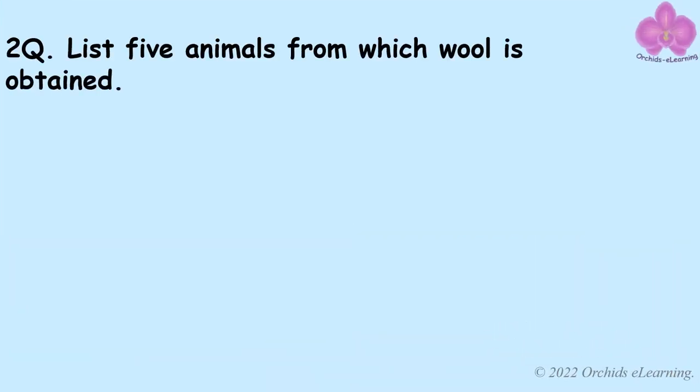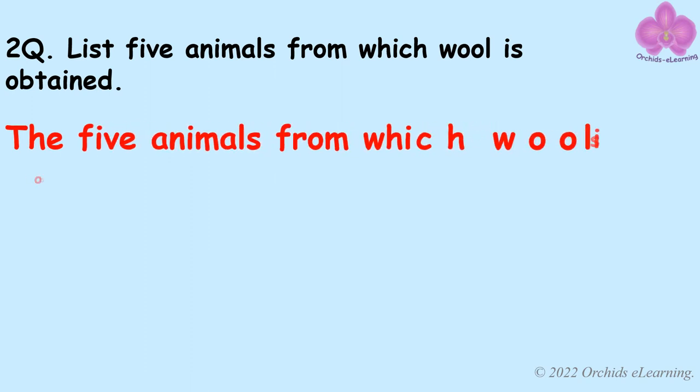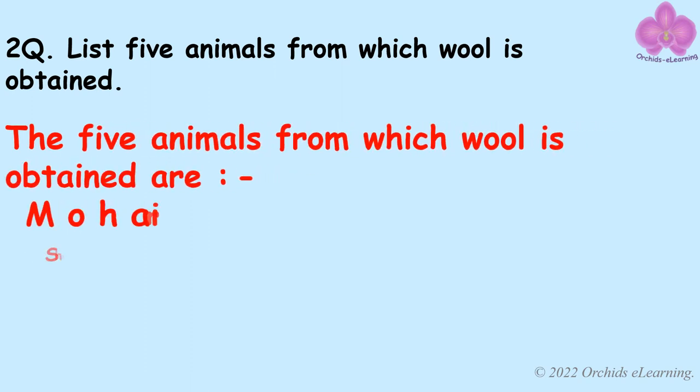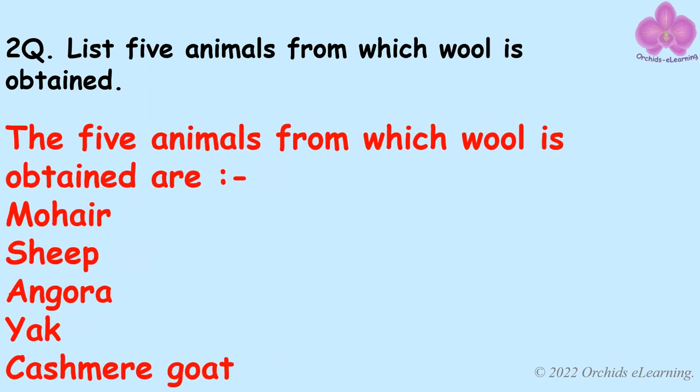List five animals from which wool is obtained. The five animals from which wool is obtained are: mohair, sheep, angora, yak, and cashmere goat.